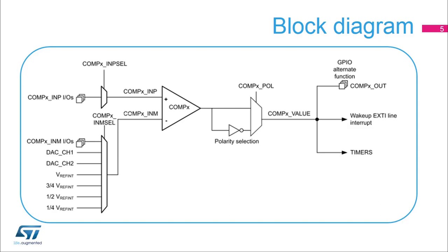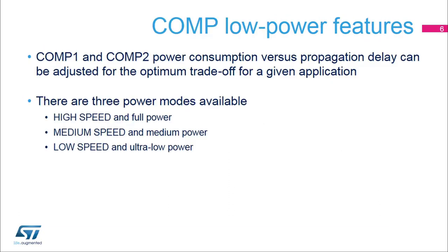This slide shows the general block diagram of the comparator integrated in the device. The comparator's power consumption can be adjusted to have the optimum trade-off between speed and energy efficiency for a given application. There are three modes available: high-speed, medium-speed, and ultra-low power.